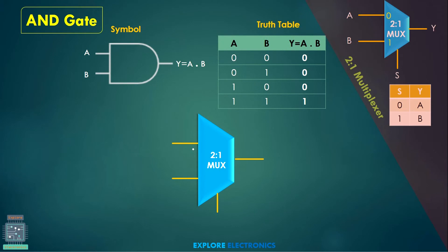Now let us see the AND gate. The AND gate has a functionality of A·B, meaning when both inputs are 1, the AND gate gives output as 1. This can be implemented using a 2-to-1 MUX like this. Let me take one of the inputs as the select line — so A will be my select line. When A is treated as the select line, I need to first pick the first input as output when A is equal to 0.